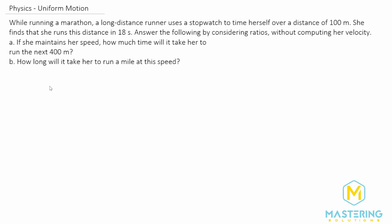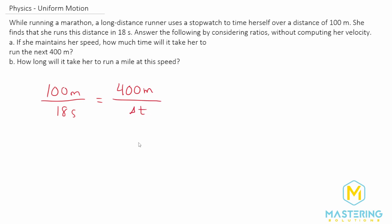When they mean ratios, we have 100 meters per 18 seconds — that is her velocity. We have a change in distance over the change in time, which gives us meters per second. That is equal to the new distance, 400 meters, divided by the new time delta t. These two will be equal to each other, and now we can isolate t to figure it out.